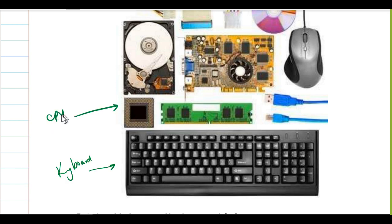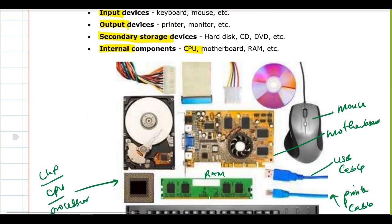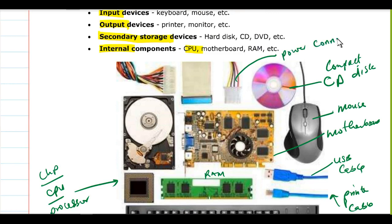This is the CPU — the one that comes in a chip, also called a processor. This is still hardware. This is RAM. This is a USB keyboard. This is the printer. This is the motherboard. This is the mouse. Anything that you can touch and see is hardware. This is a CD — compact disc — and this is the power connector that connects your power supply to the motherboard.